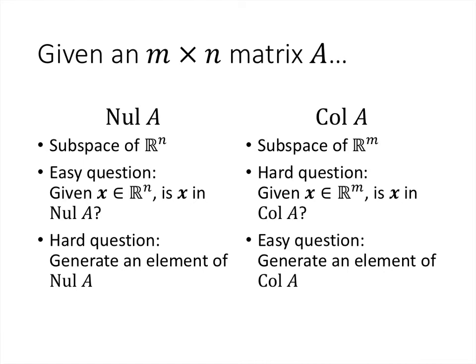Let's compare and contrast the null space and the column space. The null space is a subspace of R^n, and the column space is a subspace of R^m. If n and m are different — in other words, if the matrix A is not square — then these two spaces will live in completely different universes.